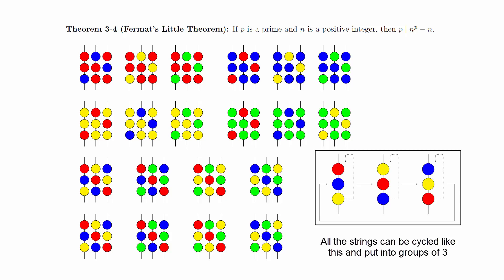Since there are 3 beads, we can do this 3 times before returning back to the original string. This fact shows that 3 must divide the number of strings that remain after removing the strings of solid color.